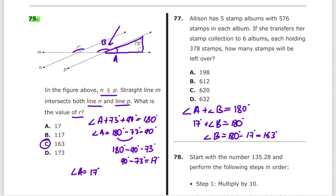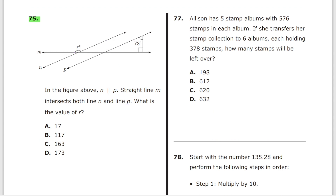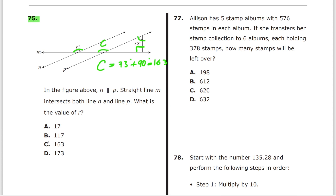I suggest a much faster solution using the exterior angle theorem. Angle R equals angle C, and angle C equals 73° + 90° = 163°, answer C. The exterior angle theorem: for any triangle with a straight line extended at one vertex, the exterior angle equals the sum of the two non-adjacent interior angles. Remember this tip.